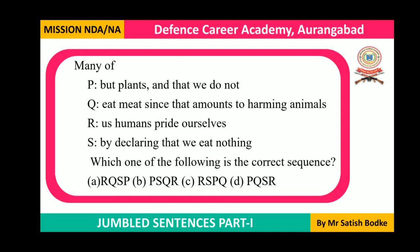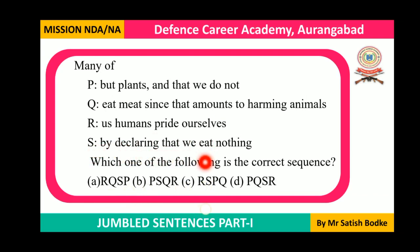Example nine: 'Many of.' After 'of' (a preposition), a noun or pronoun follows — not a conjunction or verb. Here 'us' is a pronoun: 'many of us.' The sentence: 'Many of us humans pride ourselves by declaring that we eat nothing but plants and do not eat meat, since that amounts to harming animals.' The correct sequence is R-S-P-Q. Option C is the correct answer.